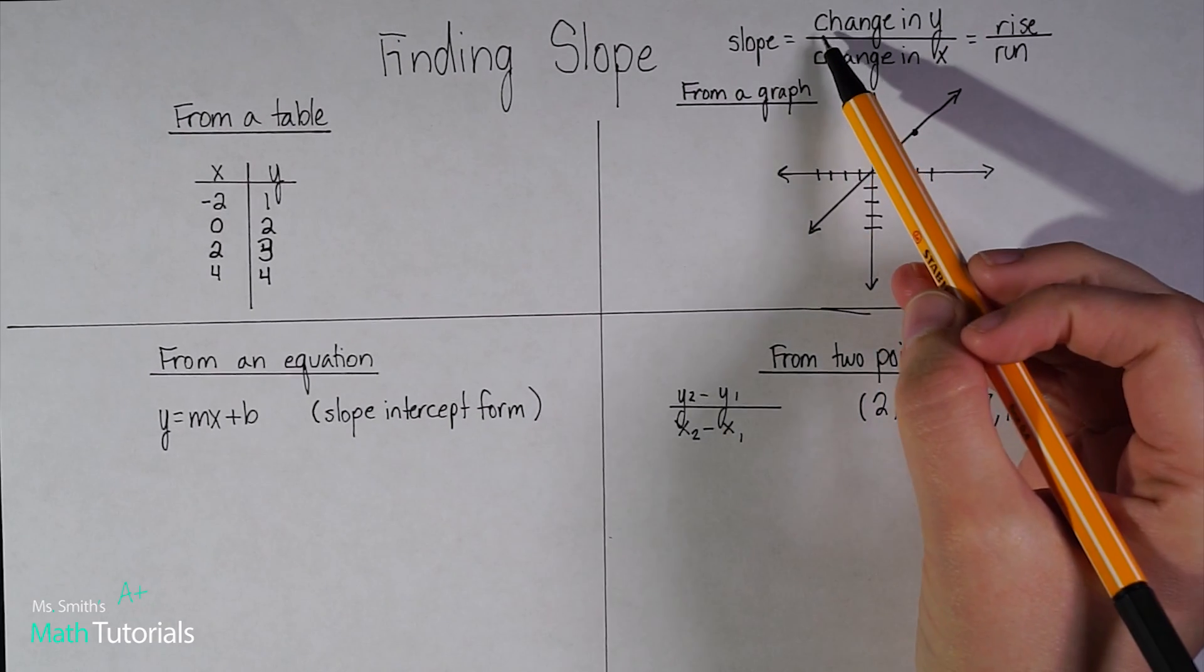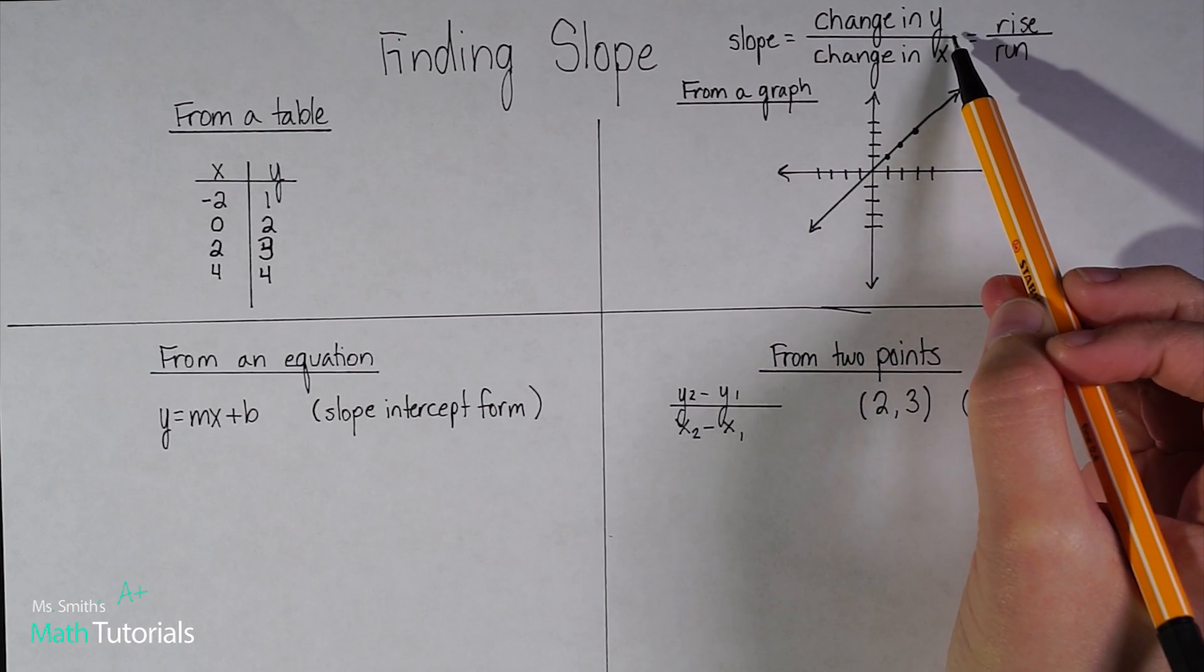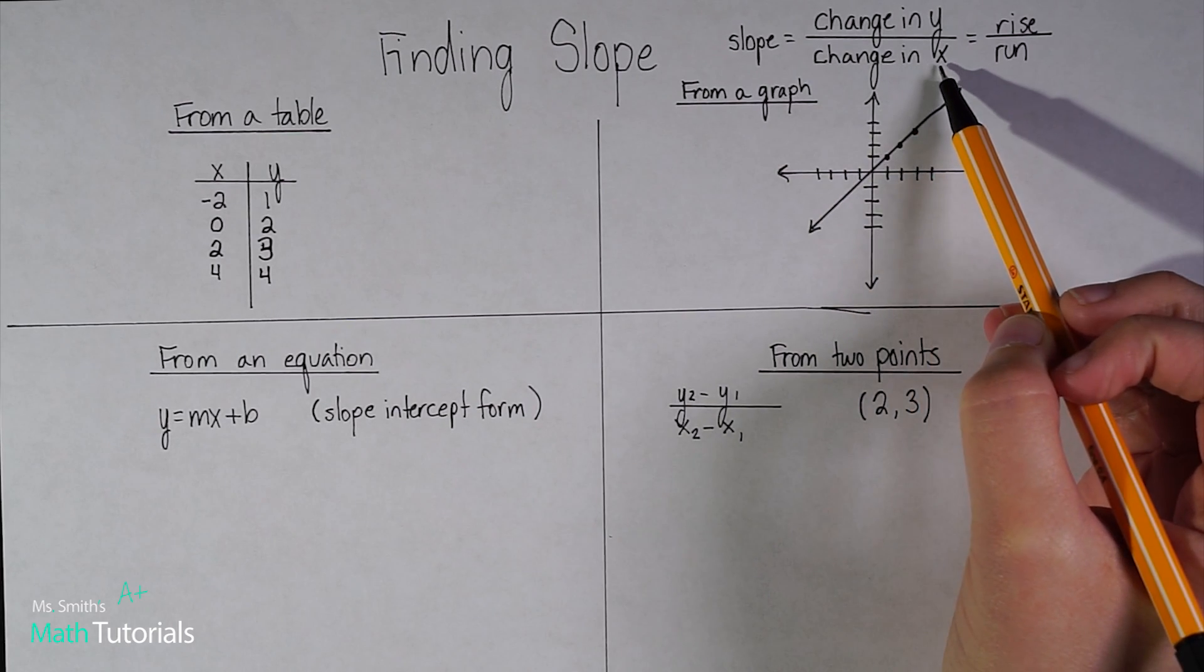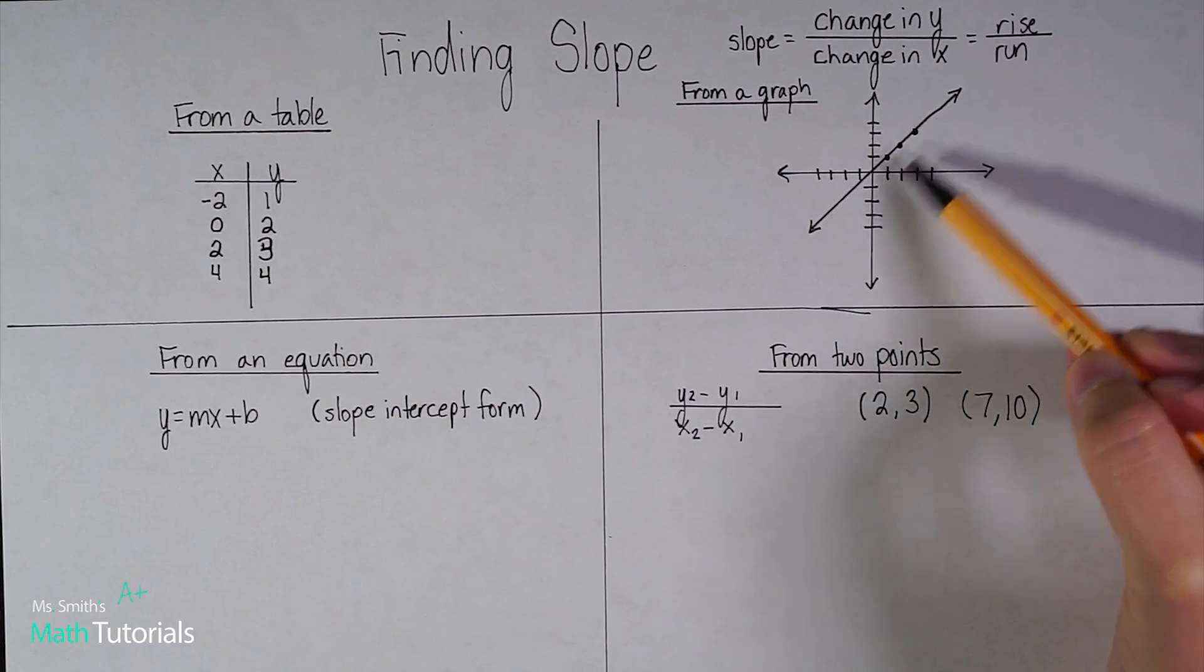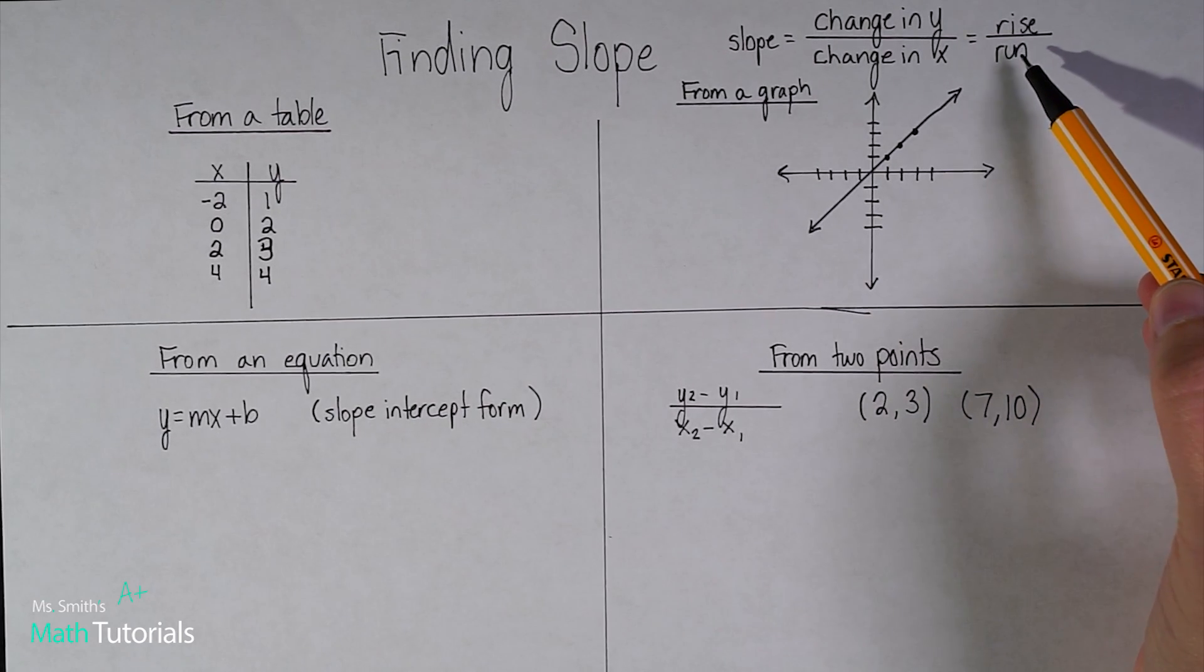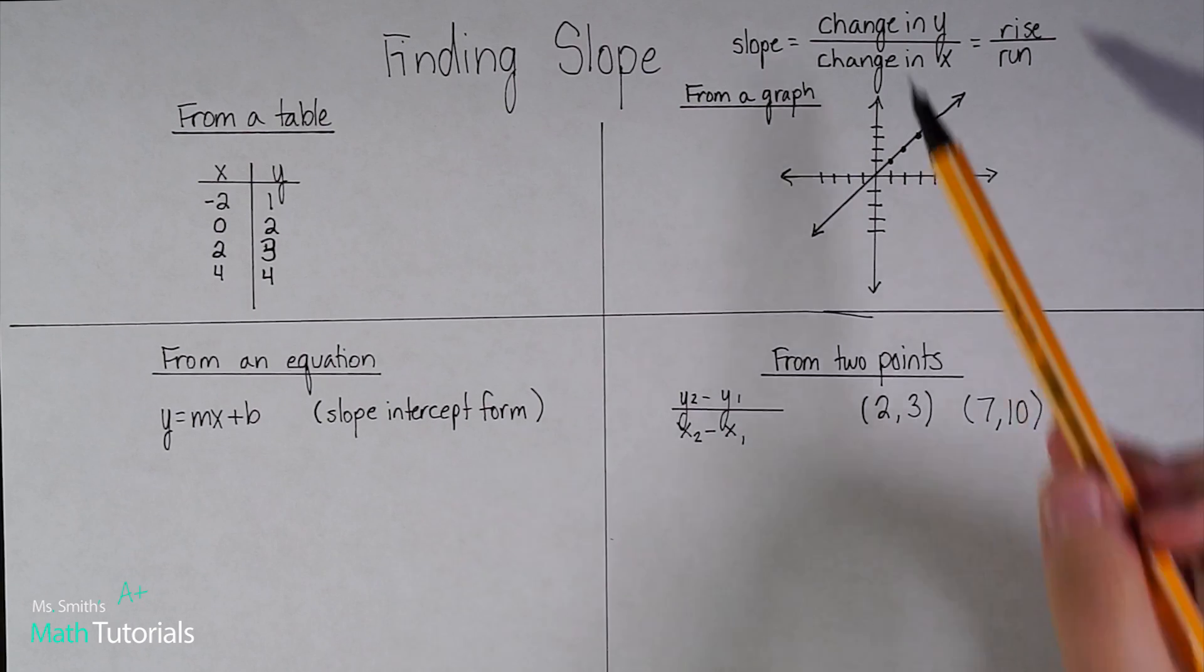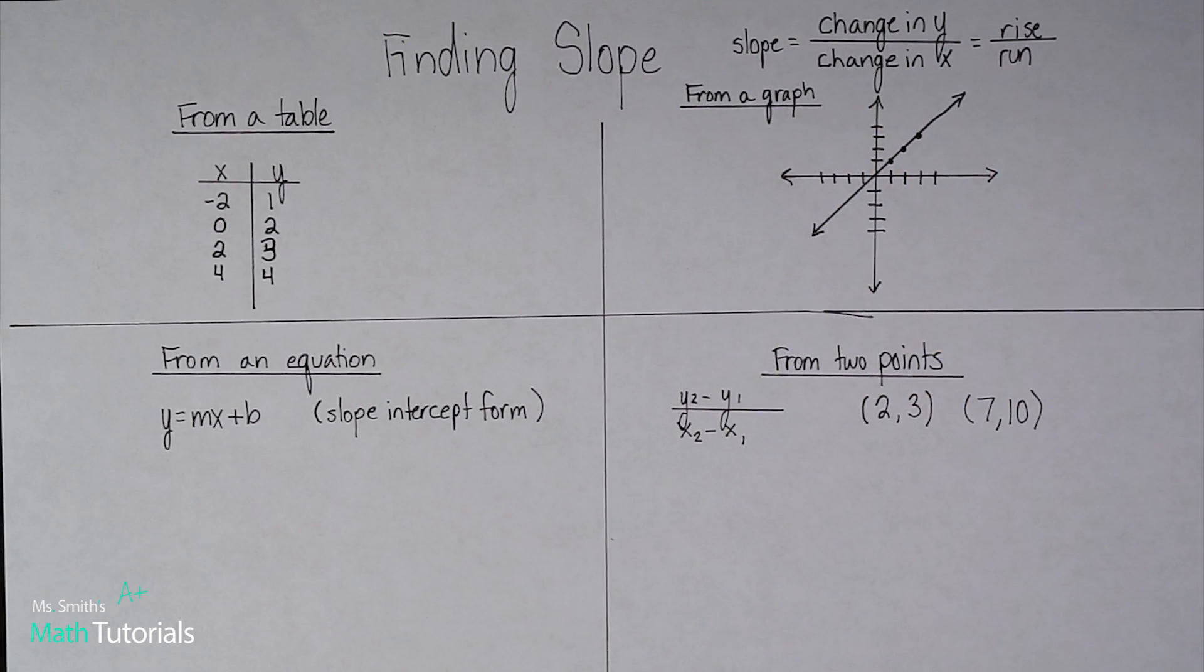In math, we would recognize that as the change in y over or divided by the change in x. When you see it in a graph form, kind of like you do here, you'll hear a lot rise over run. So that's a way to think about it. It's much easier when you look at a graph versus when you look at something like a table or two points. We want to think about it like change in y over change in x. So let's see slope in action.